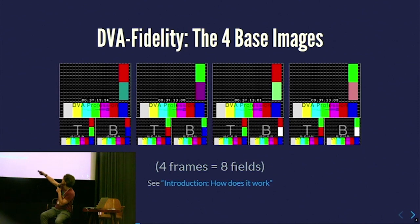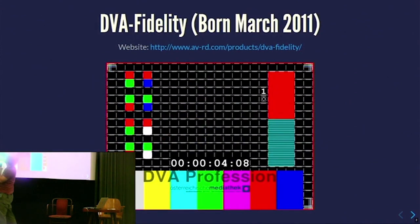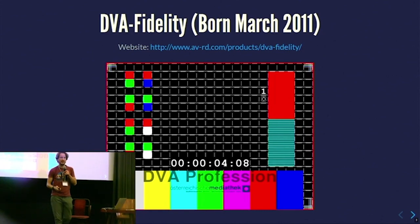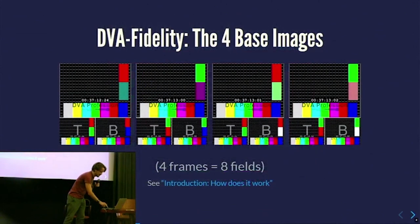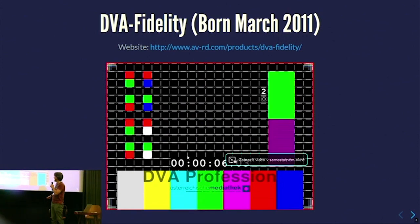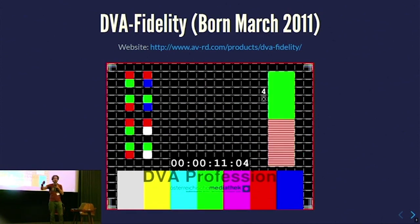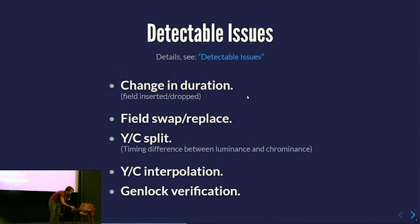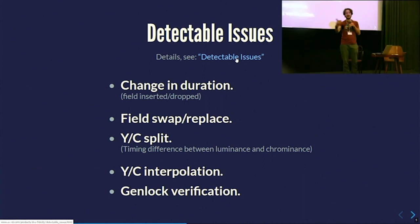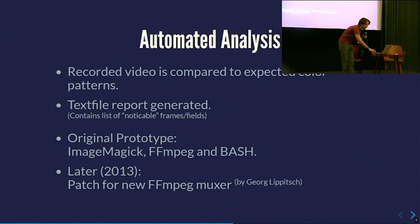What you see here is four frames, with top and bottom fields. There are color sequences — one frame has red, red, green — so this color pattern has a certain sequence. We made a VHS with four hours of this; it just blinks there. When you record this, it can detect a change in duration: field insert or dropped, field swapped or replaced. YC split — some ADCs didn't clock the timing of the luminance and chrominance signals, so you had luminance information from field one but color information from field two. We could actually detect this with this blinking sequence using automated analysis.